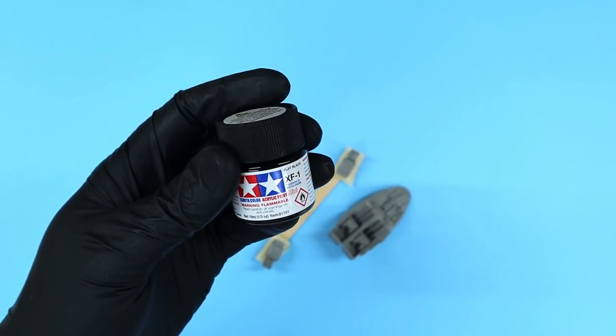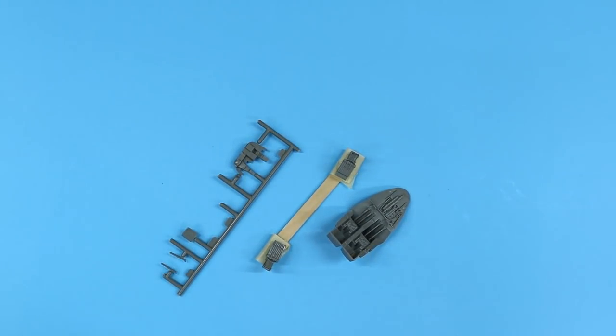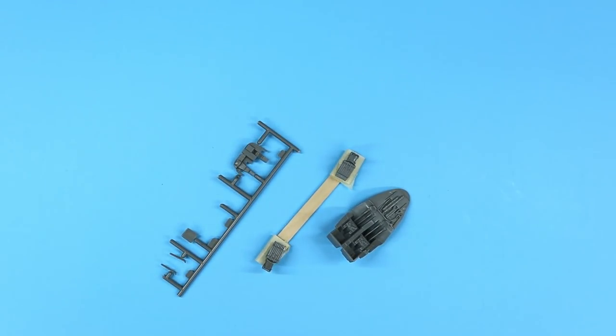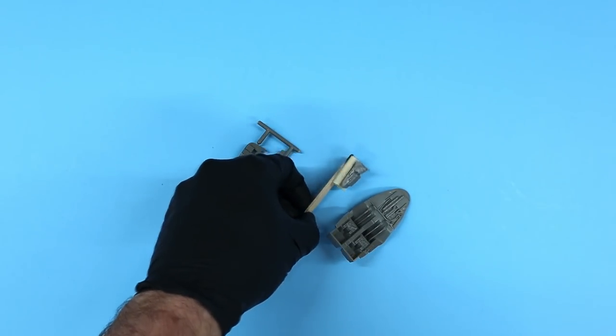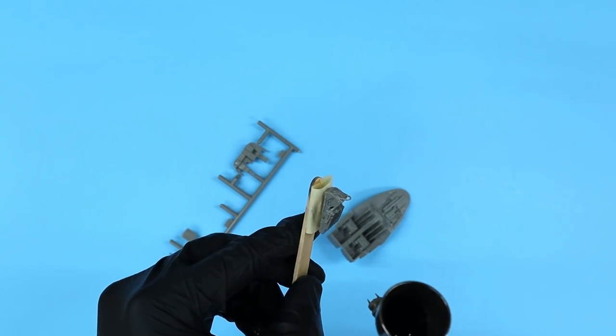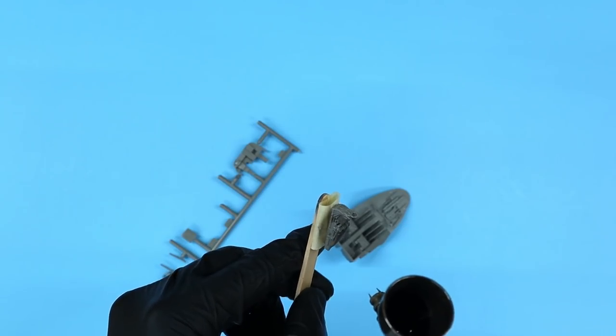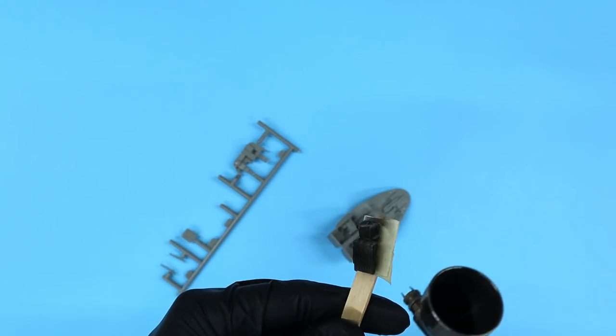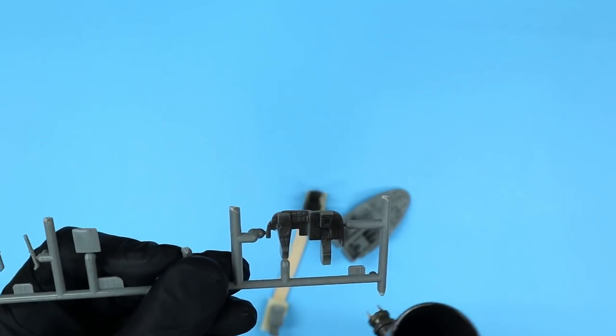I like to prime all the cockpit parts with a little Tamiya flat black. This provides a dark base that helps with the overall weathering process. I just spray it rather liberally on all of the cockpit parts including the seat backs, the tub, cockpit side walls, and instrument panel.